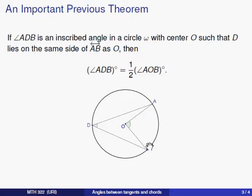Oftentimes geometry texts will call this a central angle. And we know that ADB is an inscribed angle. And so you might say this by saying that the inscribed angle has one half the degree measure of the central angle.